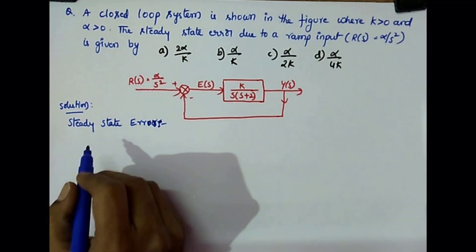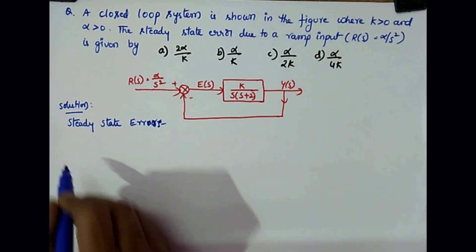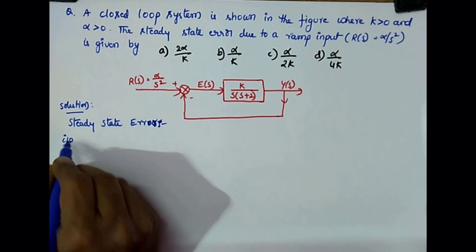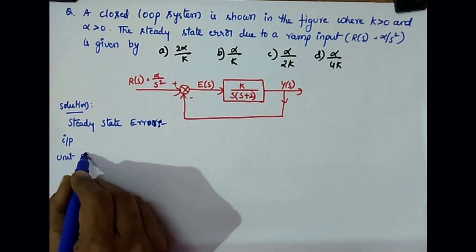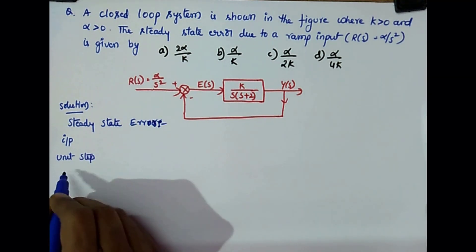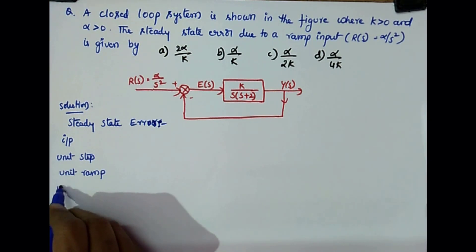To find the steady-state error we generally check the control systems with three types of inputs. The three types of inputs are unit step, unit ramp, and unit parabolic.